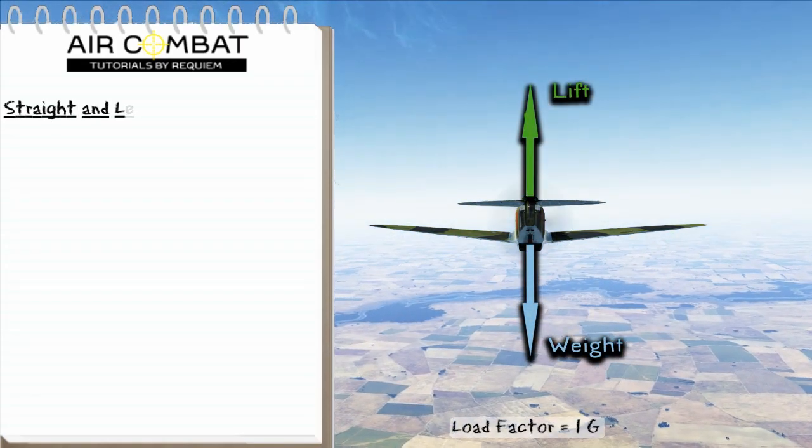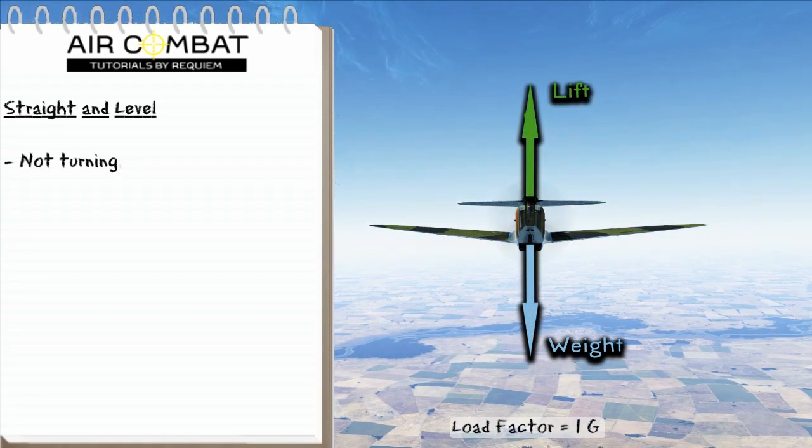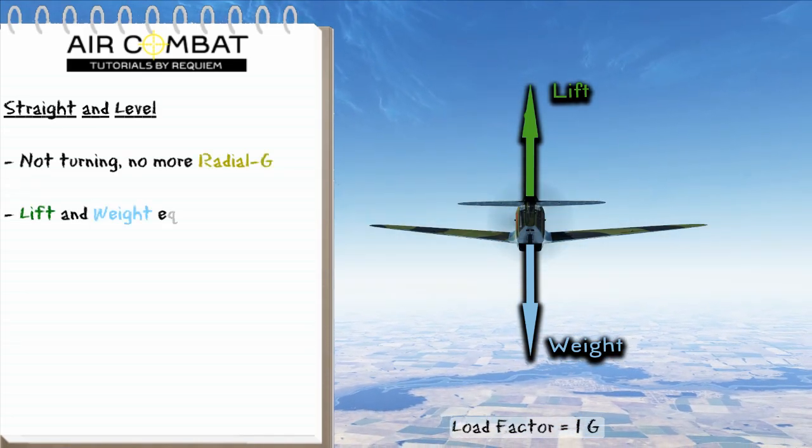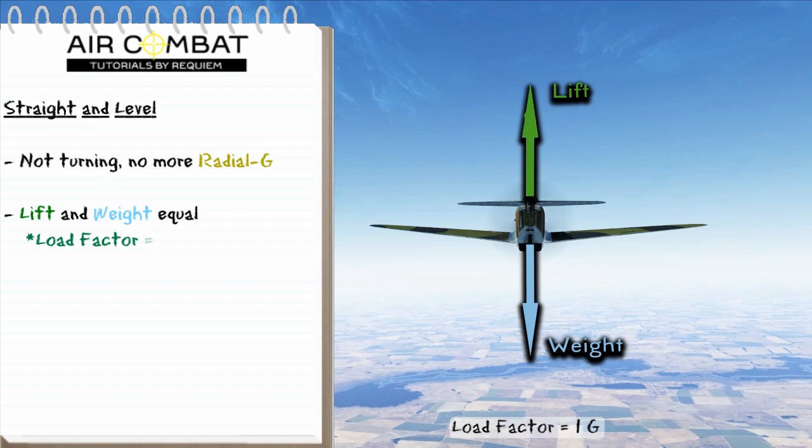Getting back into Australian level flight, we're not turning anymore, so there's no more radial G. Lift and weight are back to being equal, which means our load factor is now equal to 1G.